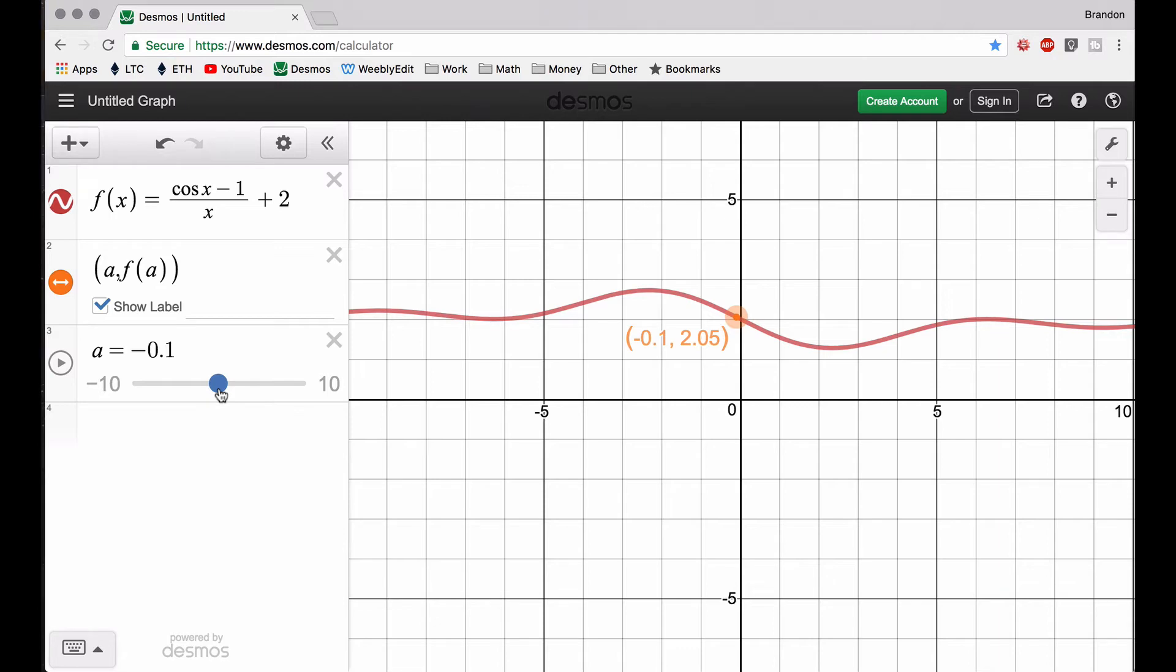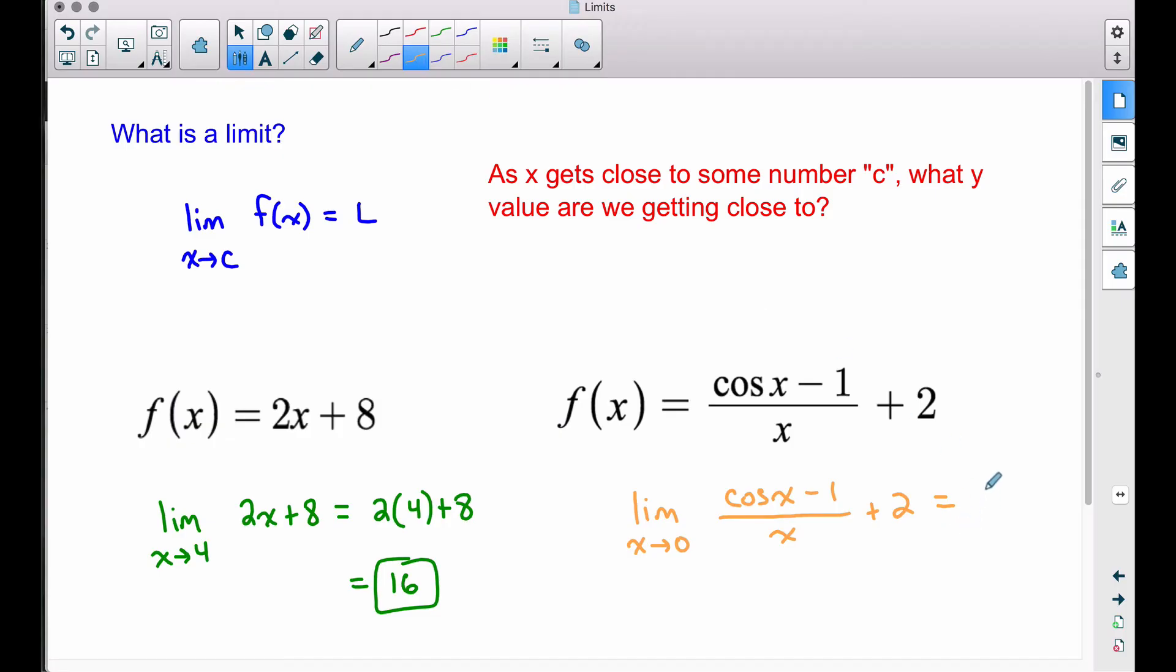It's very important to understand that sometimes the limit might not be the actual value of the function. In this case here, we don't have a value for 0. We cannot plug in 0. But as we get close to 0, we are approaching a particular y value. And in this case, this limit is 2. So coming back to this problem here, this limit is going to be equal to 2, even though we can't plug 0 into the function.